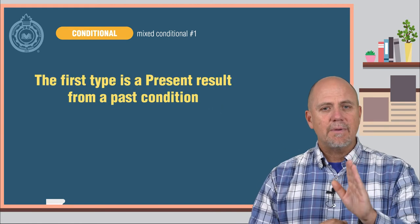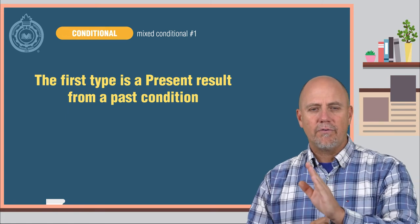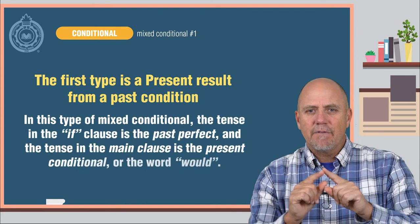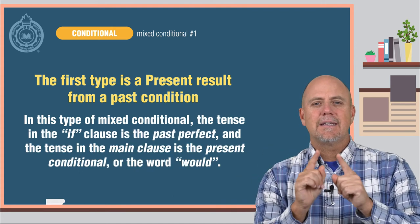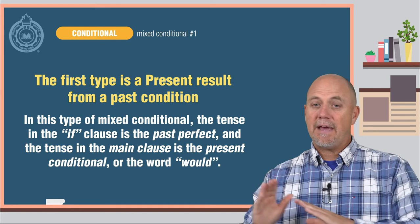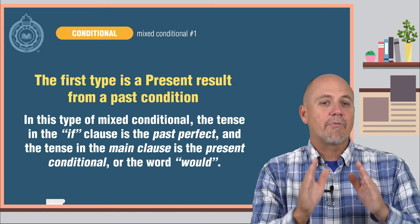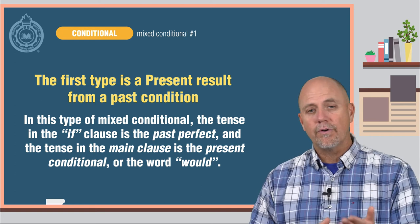The first type is a present result from a past condition. In this type of mixed conditional, the tense in the if clause is the past perfect, and the tense in the main clause is the present conditional, or the word would.